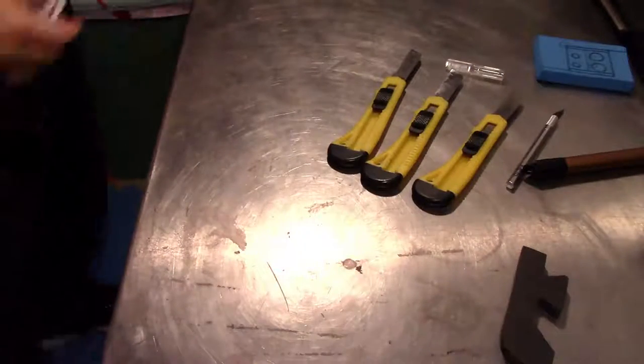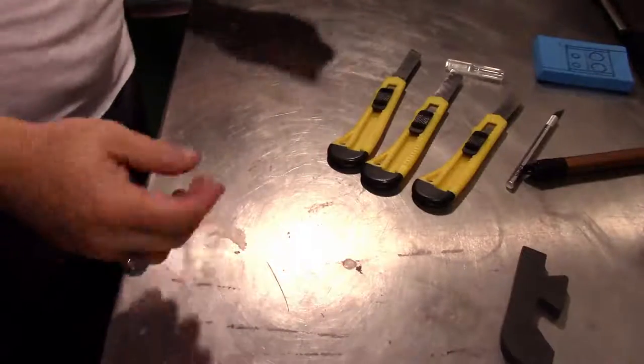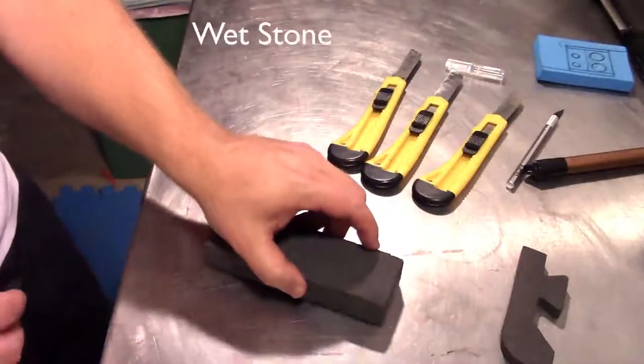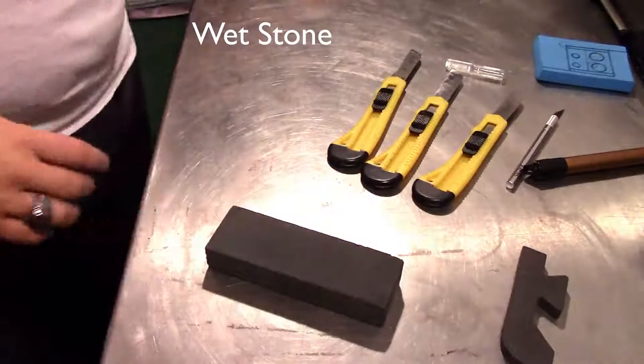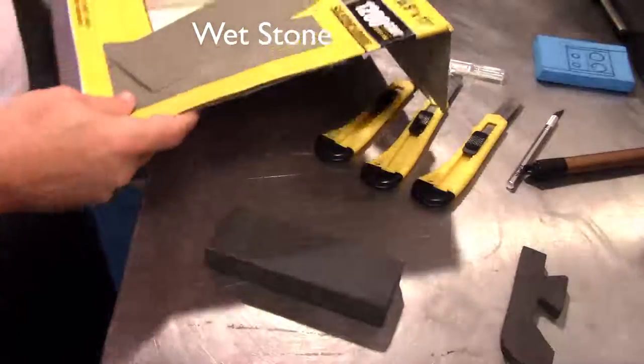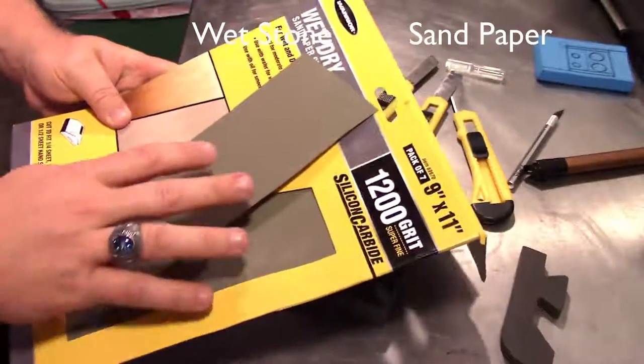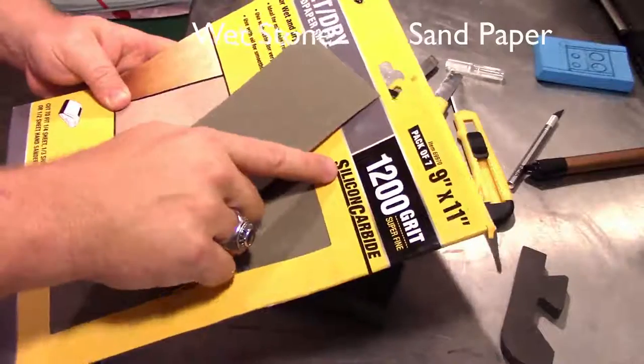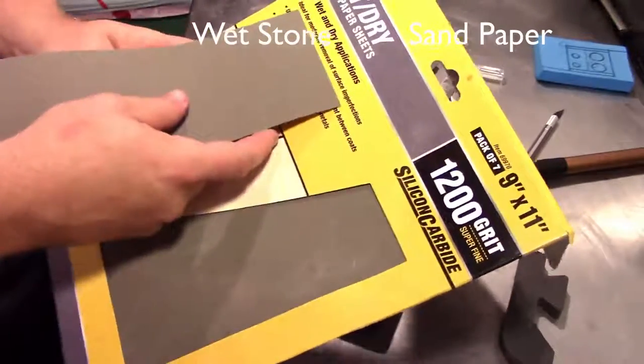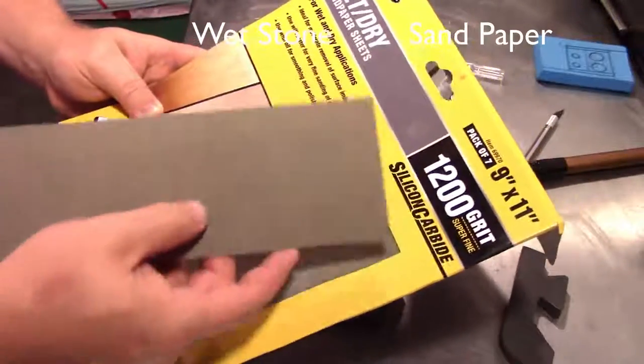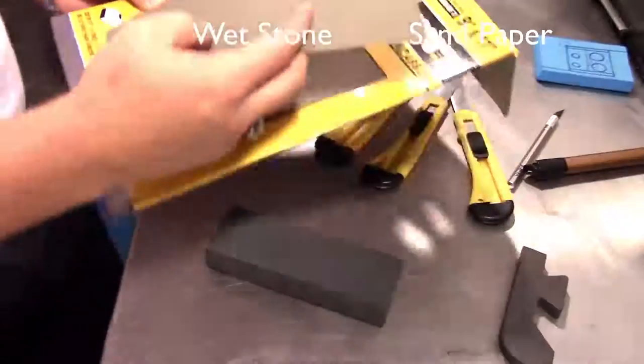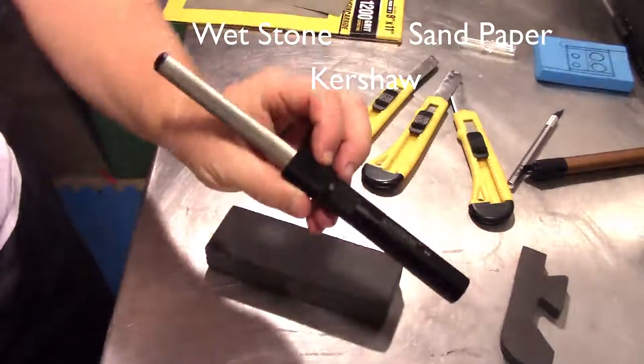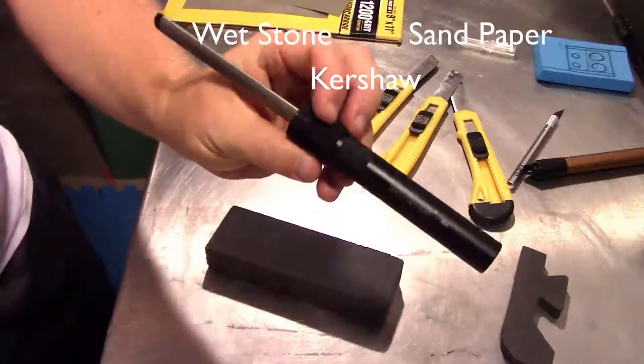Now there's many ways you can sharpen a knife. I've seen people go anywhere from a wetstone which I've used myself to using some sandpaper. When I say sandpaper I don't mean like 220 grit or any 600 grit. I'm talking about wet and dry grade 1200 grit sandpaper. Very smooth. And my favorite is the Kershaw knife sharpener.